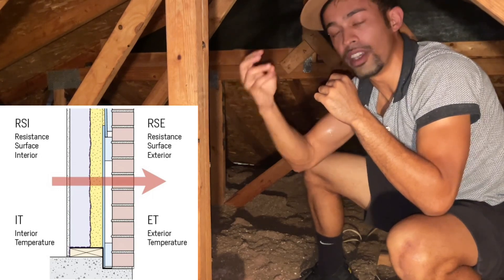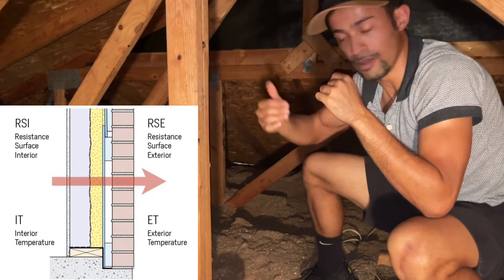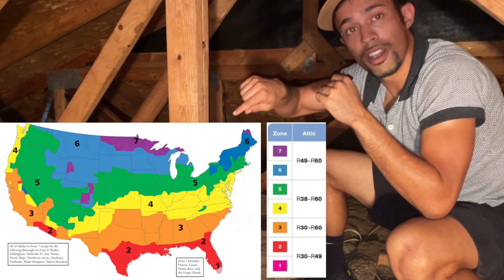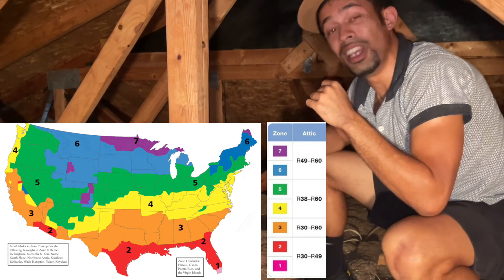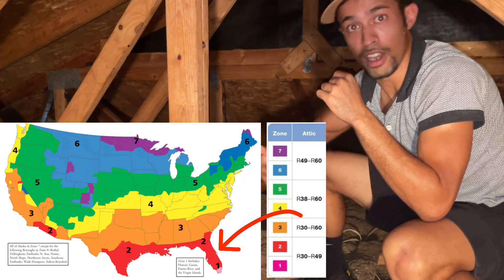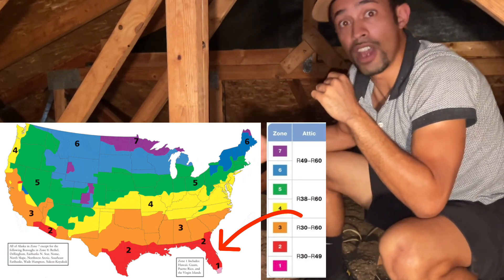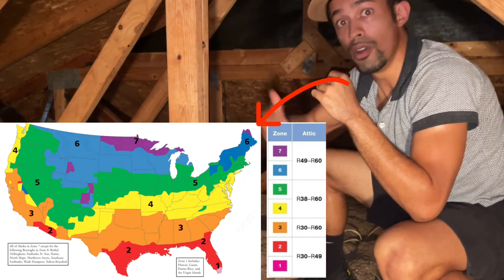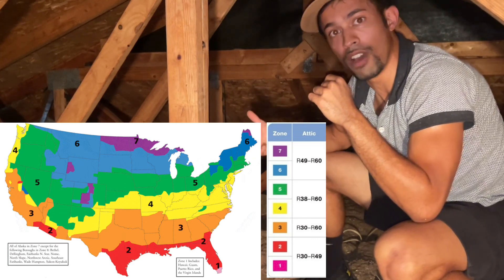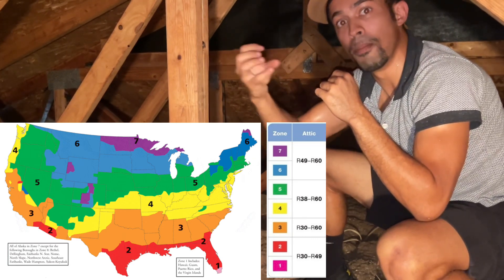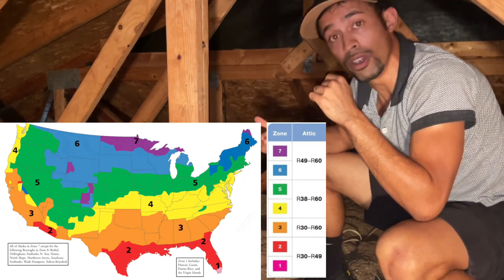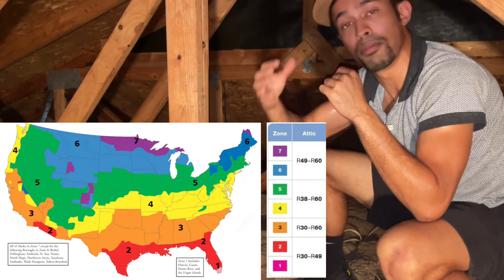How do you know how much R-value you're going to need? In the bottom left-hand corner you'll see a climate zone map. I live in Florida, so I have a low R-value requirement because it's a hot state. If you're located in Maine — zone seven — you're going to need a higher R-value because you're trying to maintain as much heat as possible since the outdoor temperature is very cold.